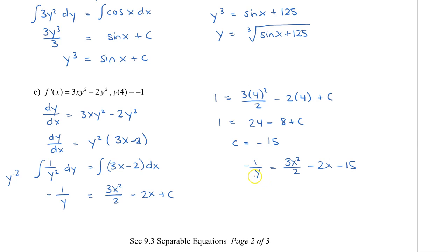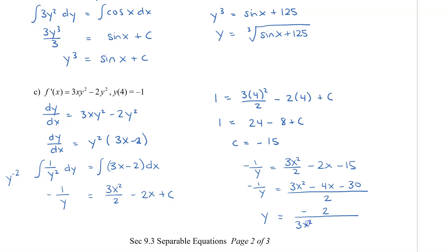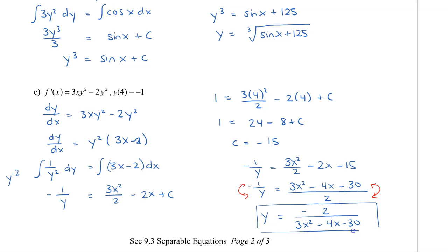We need to isolate y. First, rewrite the right side as a single fraction to get 3x squared minus 4x minus 30, all divided by 2. Taking the negative reciprocal of both sides, y equals negative 2 divided by (3x squared minus 4x minus 30). This is done by flipping both sides and multiplying by negative 1 to isolate y. This final function is the solution.